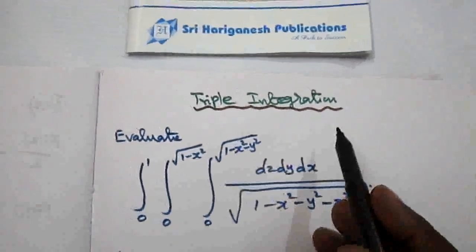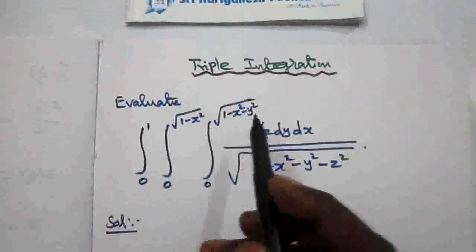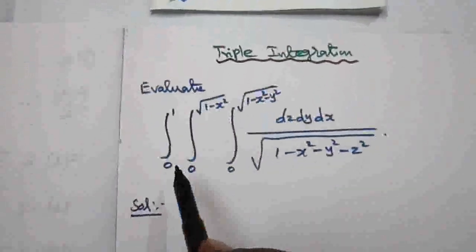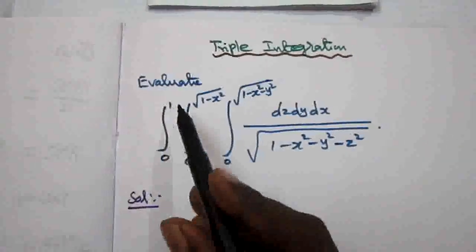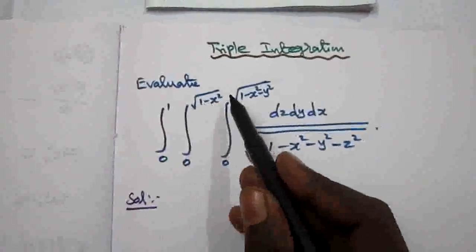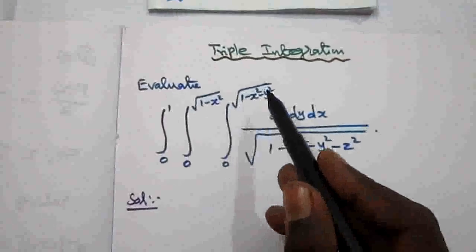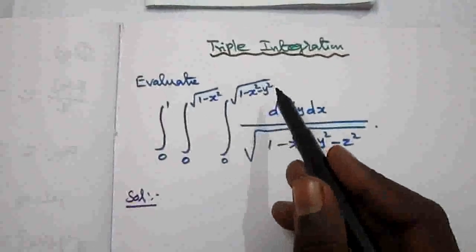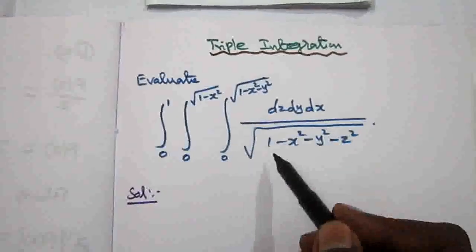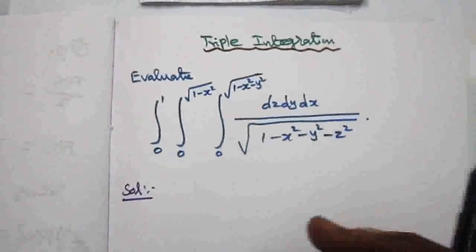Triple Integrals. First problem: evaluate the integral from 0 to 1, 0 to root of 1 minus x squared, 0 to root of 1 minus x squared minus y squared, dz dy dx divided by root of 1 minus x squared minus y squared minus z squared.